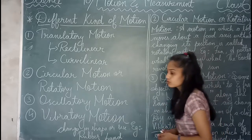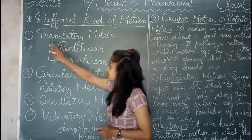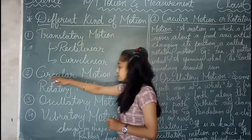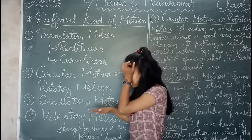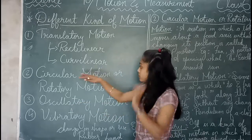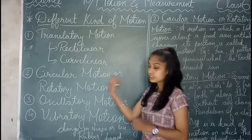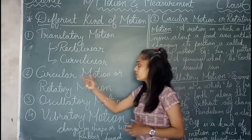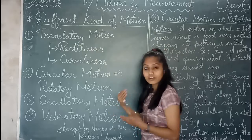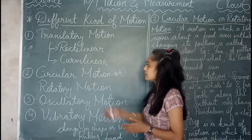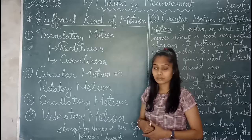We have seen 4 types of motion: translatory motion, circular motion, oscillatory motion, and vibratory motion. Circular motion is also called rotatory motion. In translatory motion, we have seen 2 different subtypes — that is rectilinear motion and curvilinear motion.